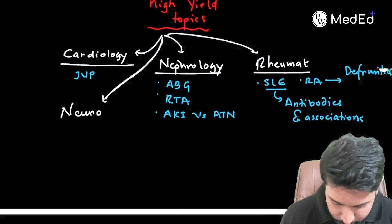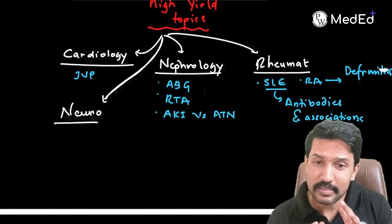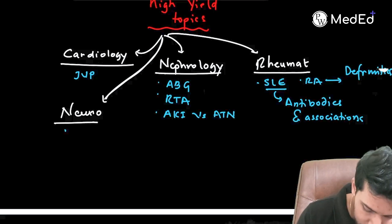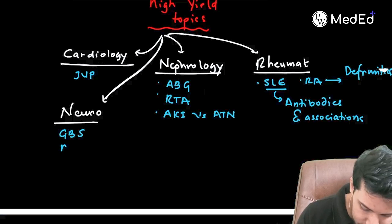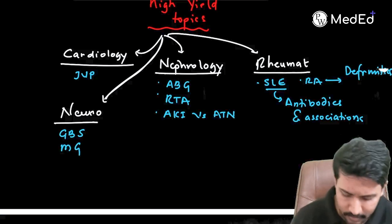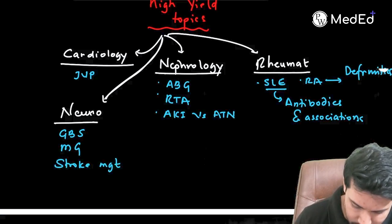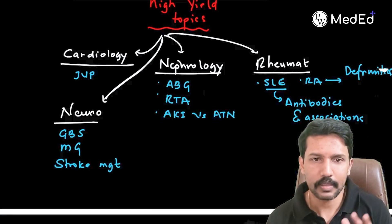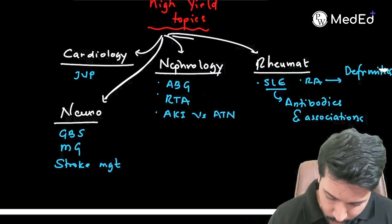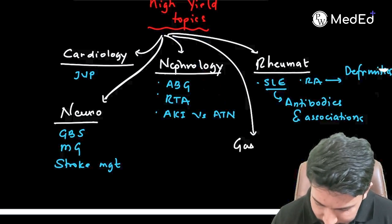From Neurology, two topics are extremely high yield with recurrent questions: Guillain-Barré syndrome (GBS) and Myasthenia Gravis. If you have additional time, you can also concentrate on stroke management.